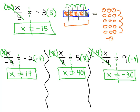By continuing this pattern of using the opposite operation, we can get the x alone on either side to find out what number x is equal to.